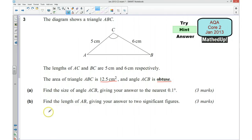Okay, so for part A we're asked to find the size of the angle ACB given our answer to the nearest 0.1 degrees. Well, because we know the area of the triangle and we also know that the area is equal to half AB sine C, we should be able to use that information to work out what this angle C is.